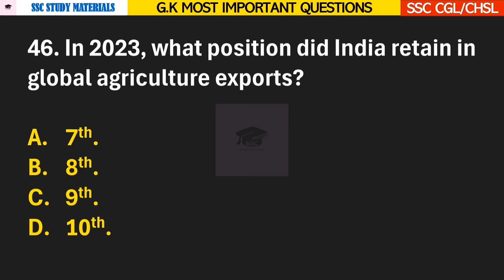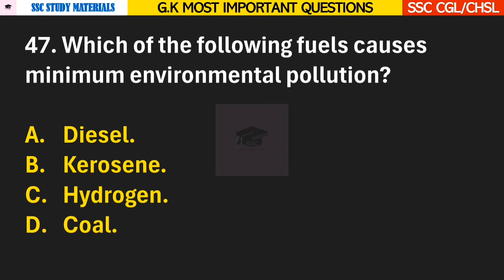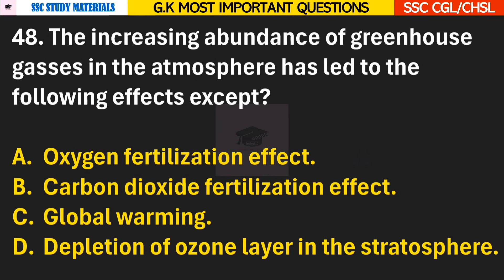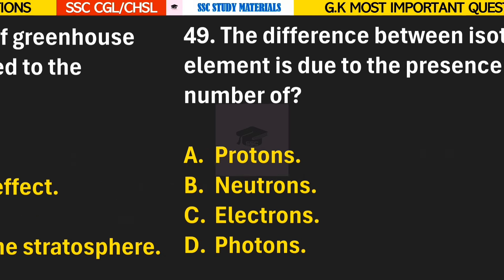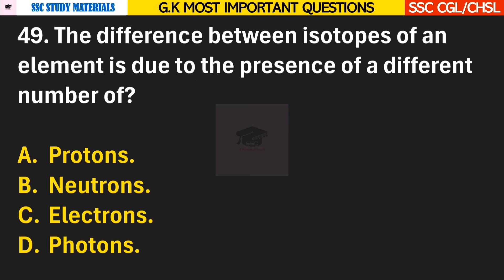Question 46: In 2023, what position did India retain in global agriculture exports? Answer B. Question 47: Which of the following fuels causes minimum environmental pollution? Answer C — Hydrogen. Question 48: The increasing abundance of greenhouse gases in the atmosphere has led to the following effects except? Answer A — Oxygen fertilization effect. Question 49: The difference between isotopes of an element is due to the presence of a different number of? Answer B — Neutrons.